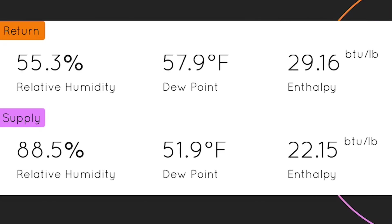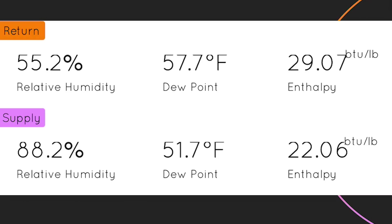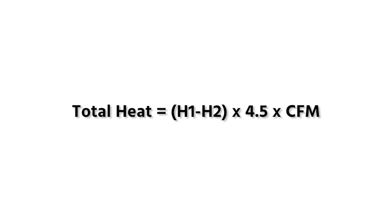We know this system is at about 730 CFM. Now we have an enthalpy on the supply of 29.13 and the return of 22.13. We currently have an enthalpy split of 7 BTUs per pound — that's the differential right there. It's right at about 7 BTUs per pound, and now we do the calculation.